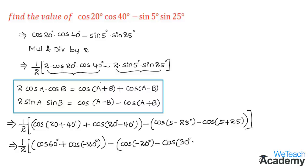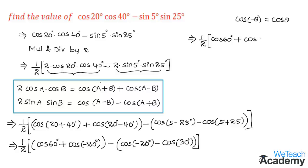Now we use the identity cos(−θ) = cosθ. Applying this, cos(−20°) becomes cos 20° in both places. So the expression becomes (1/2)[cos 60° + cos 20° − cos 20° − cos 30°]. Here cos 20° and −cos 20° cancel each other out.